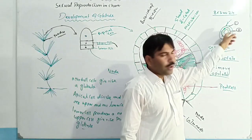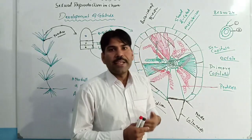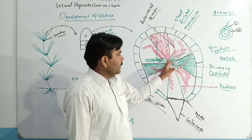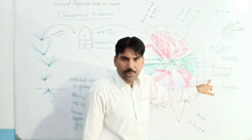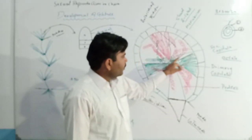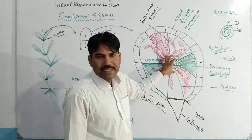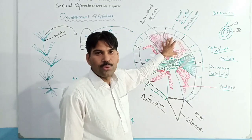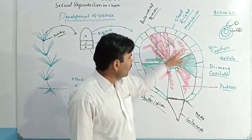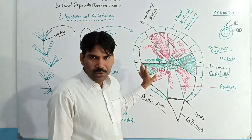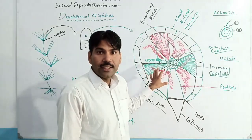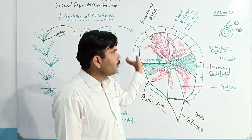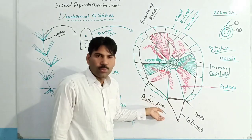The inner cells give rise to the primary capitula. The primary capitula cells divide and produce secondary capitula. The cells of secondary capitula divide again and again and produce filaments known as antheridial filaments. The cells still present in the antheridial filaments are known as antheridial proper, which are immature. They are then converted into mature antheridia.